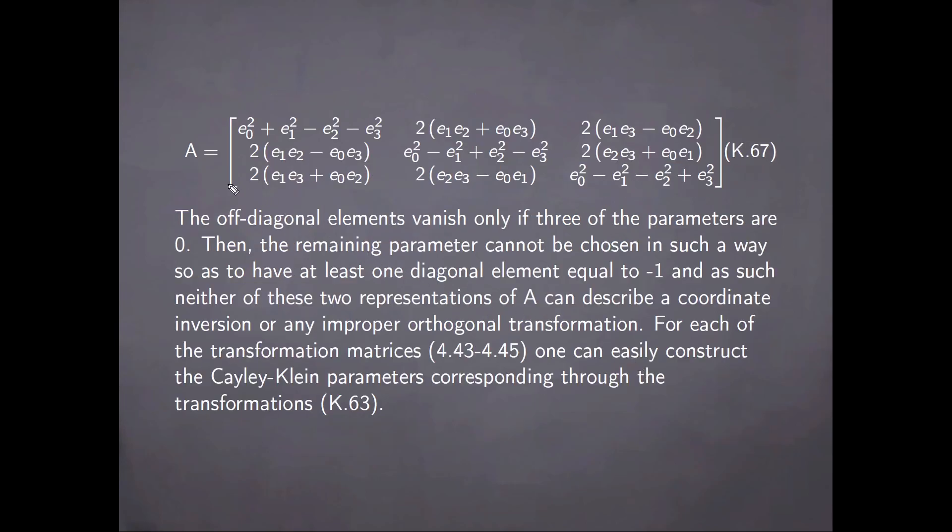And then the matrix A can be immediately cast into this form, which makes the reality of its elements manifest. And we notice that the off-diagonal elements vanish only if three of the parameters are zero. Then the remaining parameter cannot be chosen in such a way so as to have at least one diagonal element equal to minus one. And as such, neither of these two representations of the matrix A can describe a coordinate inversion or any improper orthogonal transformation.